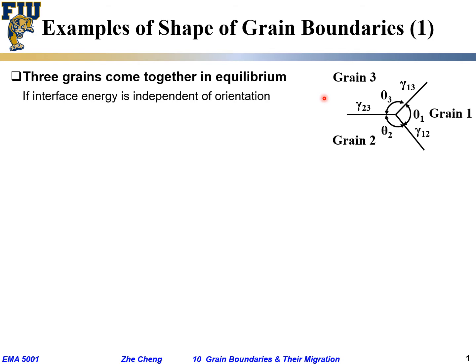For simplicity, if we say the interfacial energy — the grain boundary energy — is independent of orientation, which means we are talking about high-angle grain boundaries, not twin-type boundaries. In the general case they are pretty much the same.